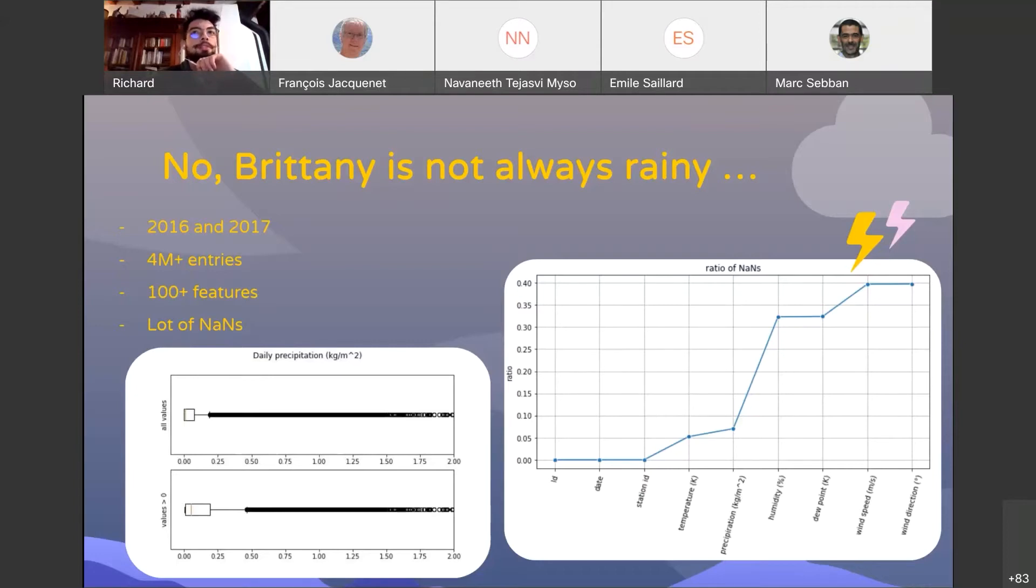And on the left, you can see that no, Brittany is not always rainy because the first quartile and the median are nearly zero.